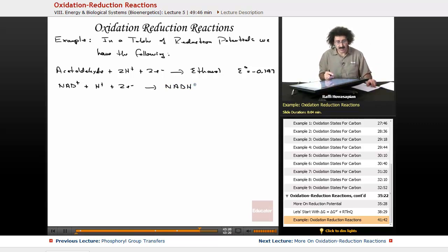Don't worry about what NAD plus and NADH are right now. We're actually going to be discussing that in the next lesson. For right now, it's just a species. It is the oxidized version of the species. In the vicinity of a couple of electrons, when it becomes reduced, it turns into this thing called NADH, and it has a reduction potential relative to the reference hydrogen electrode. Its reduction potential is negative 0.320.